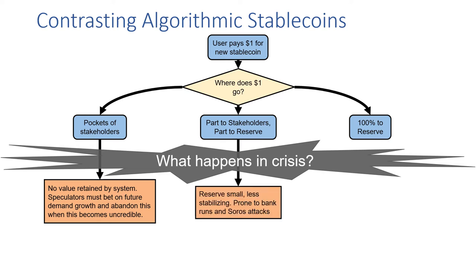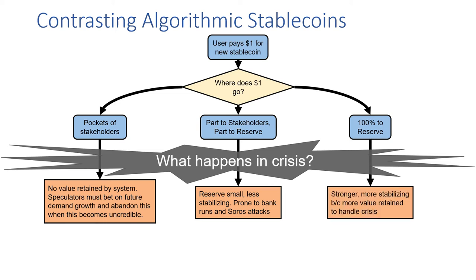When assets partly go to stakeholders and partly to a reserve, the reserve is necessarily small and less stabilizing than it could have been. The system may be prone to bank run-like effects and Soros-style speculative attacks. Conversely, when all assets are retained by the system in a reserve, the system is necessarily stronger and more stabilizing because there's more value retained to handle a crisis.